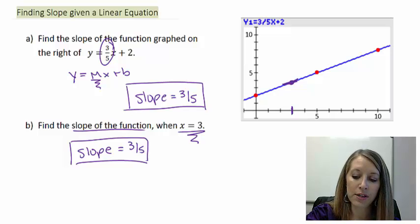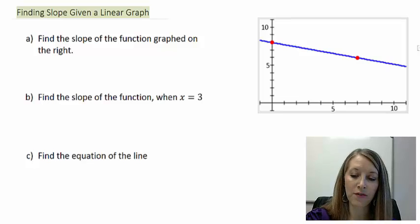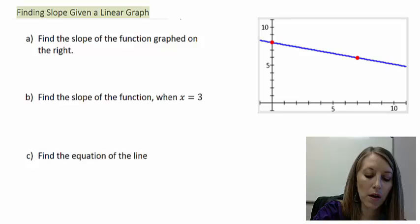Let's do another example very similar to this. We want to find the slope of this function graphed on the right, except for this time I didn't give you the equation that goes along with it. Then after we do that, we again specifically want to look at the point when x is equal to 3. And then once we do that, we want to figure out what the equation of the line is.